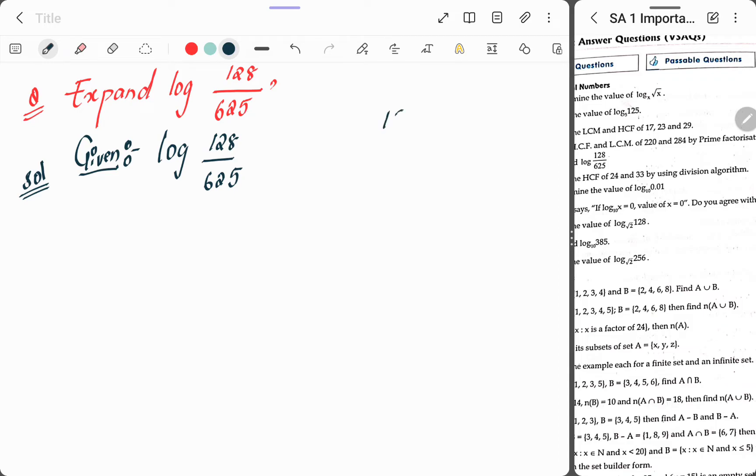Let's take out the prime factorization of 128. 2 divides 128: 2, 64, 2, 32, 2, 16, 2, 8, 2, 4, 2, 2, 2, 1. So 2 is repeating how many times? 1, 2, 3, 4, 5, 6, 7 times.